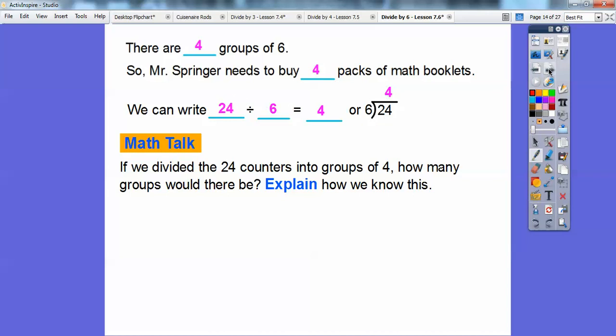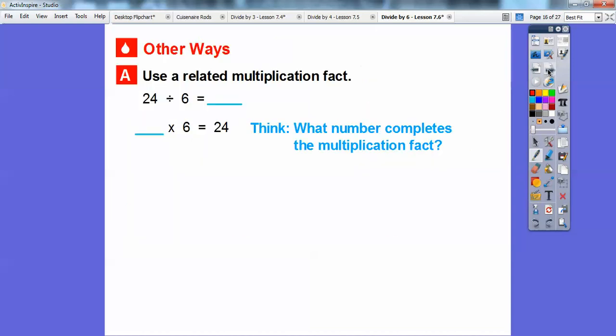Remember, multiplication is the opposite of division. So there would be 6 groups. Since 24 divided by 6 equals 4, that means 4 times 6 equals 24. We can reverse it and say 24 divided by this number equals this number.